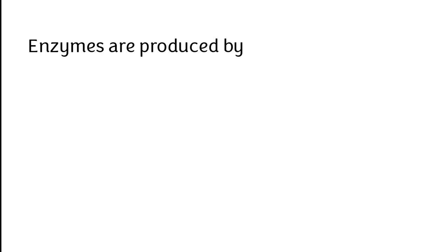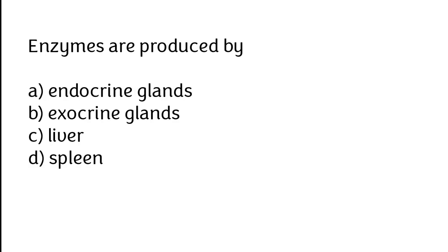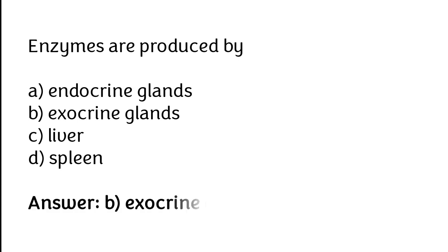Enzymes are produced by: endocrine glands, exocrine glands, liver, or spleen. The correct answer is option B. Enzymes are produced by exocrine glands.